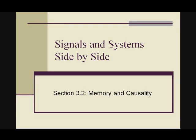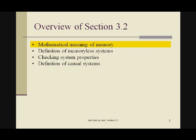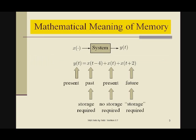We're continuing in Chapter 3, describing systems in the time domain, and we're now in Section 3.2: Memory and Causality. In this section we will look at the mathematical meaning of memory, define a memoryless system, talk about how you check system properties, and then we'll look at the definition of causal systems.